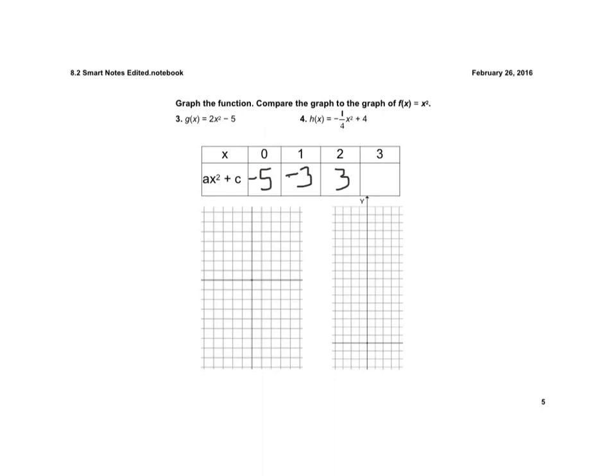And the last one, 3 squared is 9, 2 times 9 is 18, and 18 minus 5 is 13.